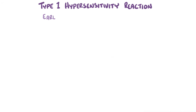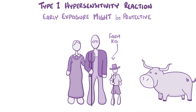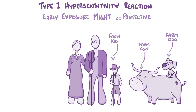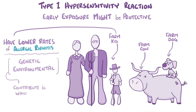Interestingly, there's evidence that early exposure to allergens might protect against type 1 hypersensitivity. For example, children who grow up on farms and have pets at an early age typically have lower rates of allergic rhinitis. It's thought that a combination of genetic factors and environmental factors like these contribute to which type of T-cell group is most common, and thereby influences the overall immune response.